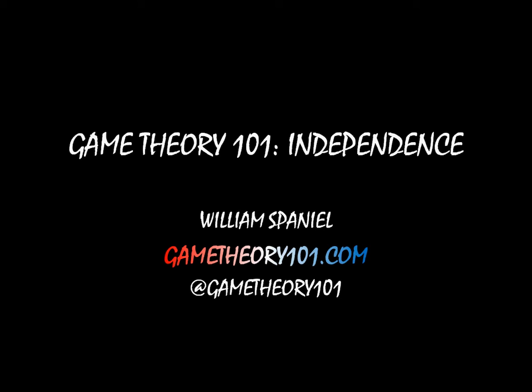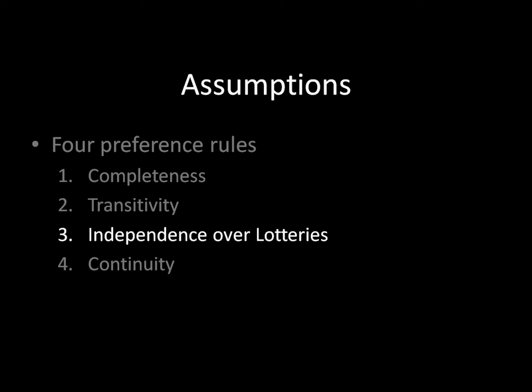We've been covering the four axioms we need to use expected utility theory. Previously, we've talked about completeness and transitivity. Those two axioms dealt with preferences over outcomes that are occurring with certainty. Independence over lotteries and continuity, in contrast, deal with preferences with uncertainty.